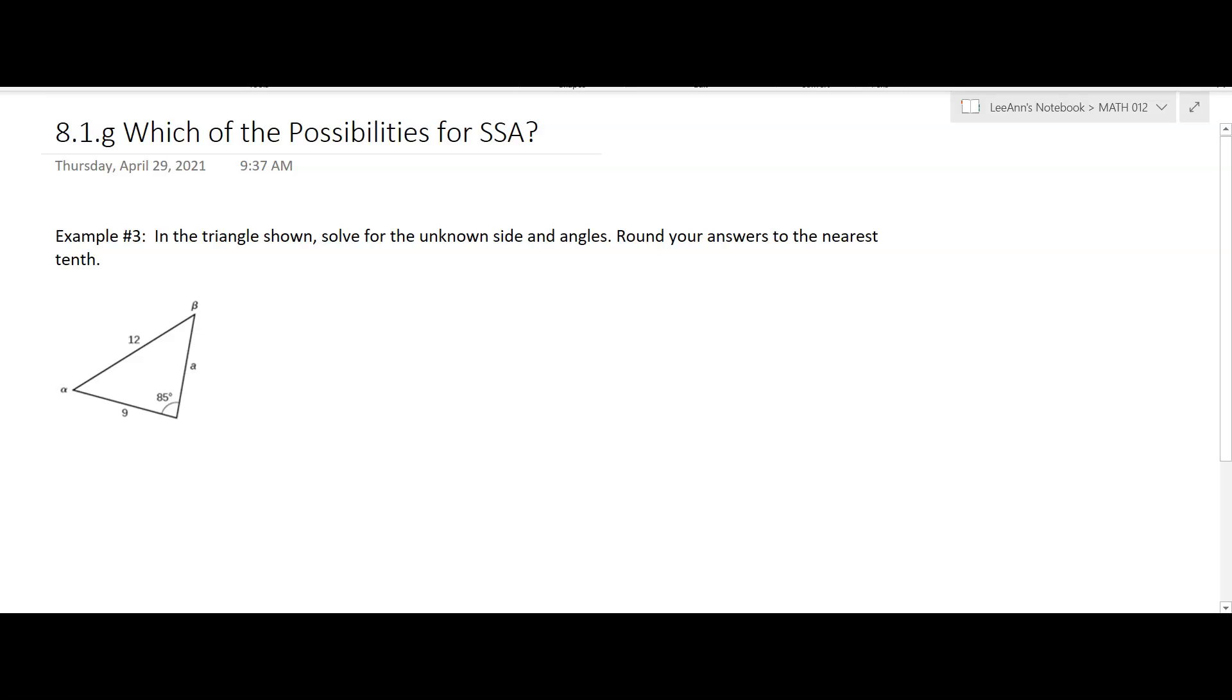Okay, so here we have a triangle that we're trying to solve, and we're going to round our answers to the nearest tenth. So we're going to have alpha, beta, gamma, and a, b, c.